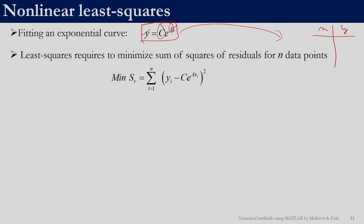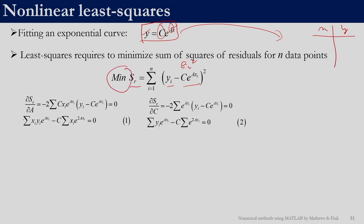We apply the same concept again. We form the sum of squared residuals. The observed data point is y_i, the model is c·e^(a·x_i), where x_i is the ith value of the independent variable. This is the error associated with the ith point — square it and then sum it up. That is our objective function. Our job is to find the values of c and a such that ∂S_r/∂a = 0.